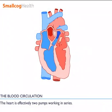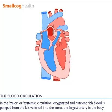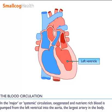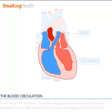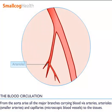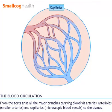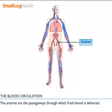The heart is effectively two pumps working in series. In the major or systemic circulation, oxygenated and nutrient-rich blood is pumped from the left ventricle into the aorta, which is the largest artery in the body. From the aorta arise all the major branches carrying blood via arteries, arterioles, smaller arteries, and capillaries — microscopic blood vessels — to the tissues. The arteries are the passageways through which fresh blood is delivered.